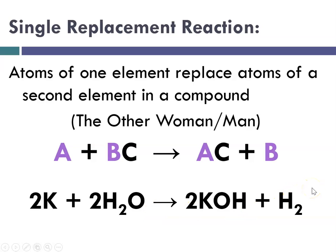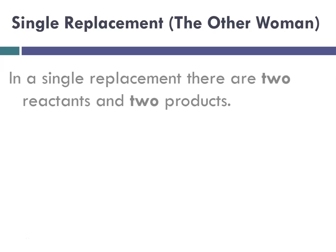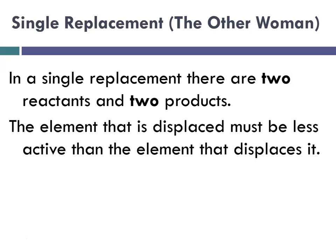My example is two potassiums react with two water molecules to produce two potassium hydroxides and a hydrogen molecule. With single replacement there are two reactants and two products — an element and a compound — yielding a different element and a different compound. The element that is displaced must be less active than the element doing the displacing.